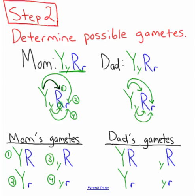Option one: big Y, big R. Option two: big Y, little r. Option three: little y, big R. Option four: little y, little r. So we just figured out the possible different combinations for mom's genotype. Mom's gametes could be: number one, big Y big R; number two, big Y little r; number three, little y big R; number four, little y little r. You foil in order to do that, and you're always going to have four combinations — you need one Y and one R in each one.